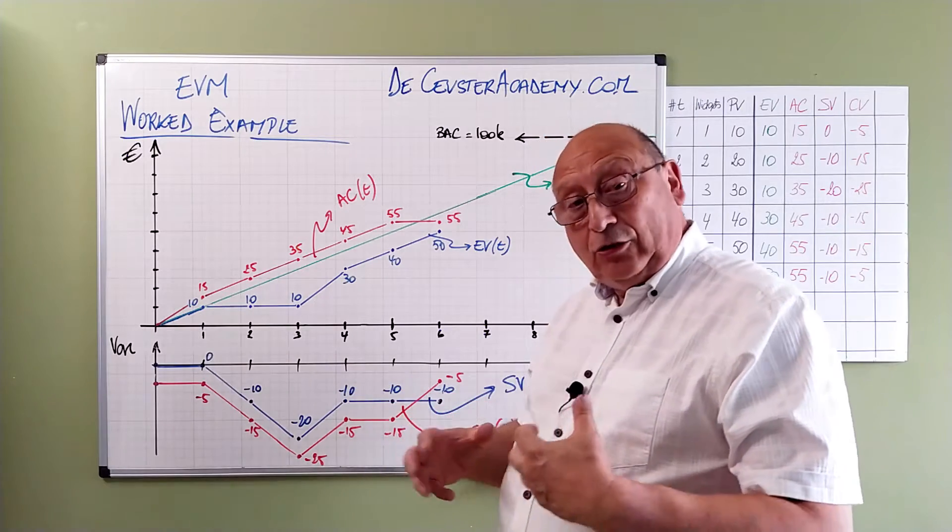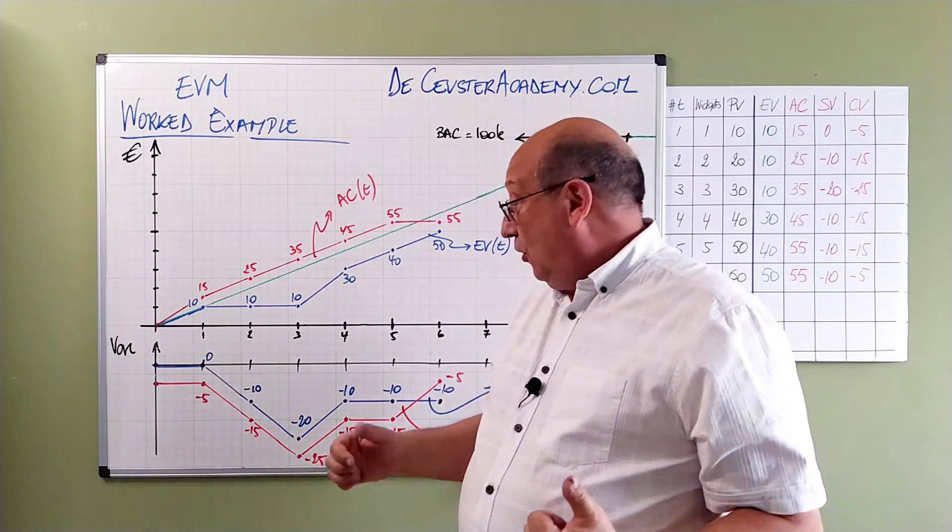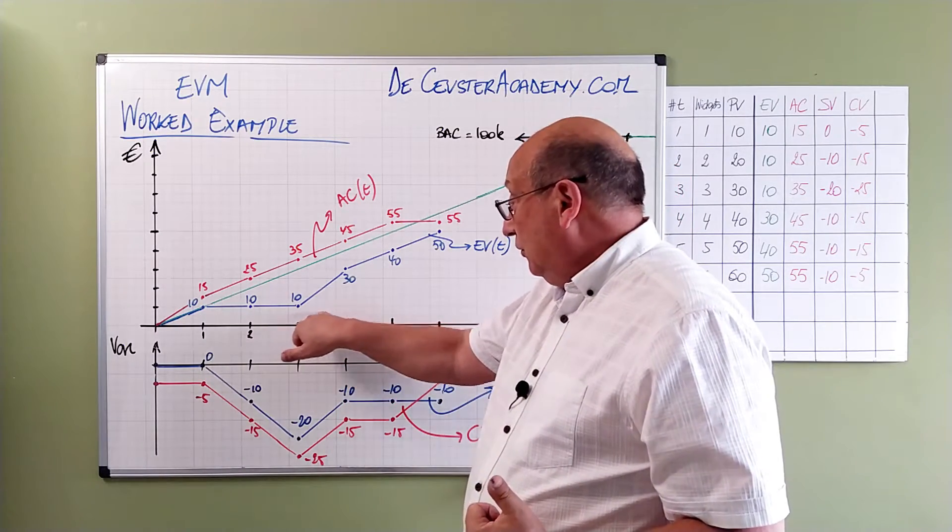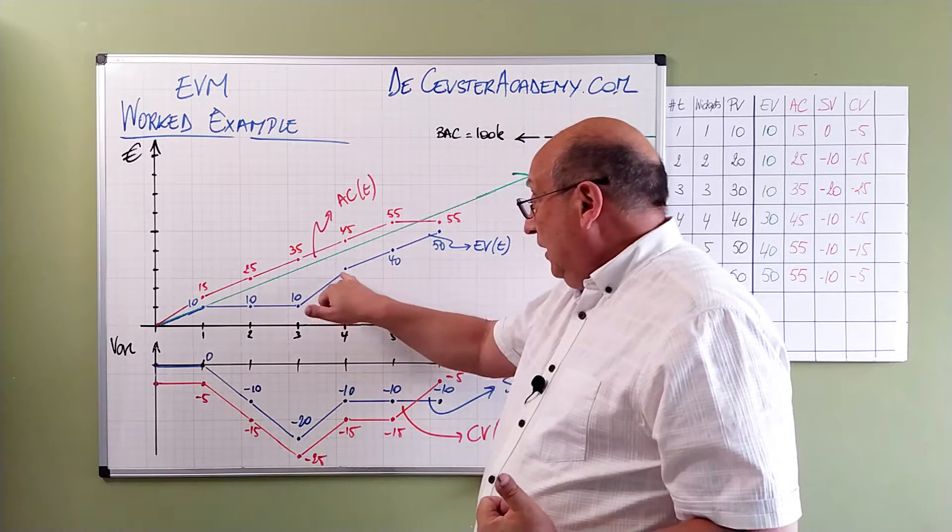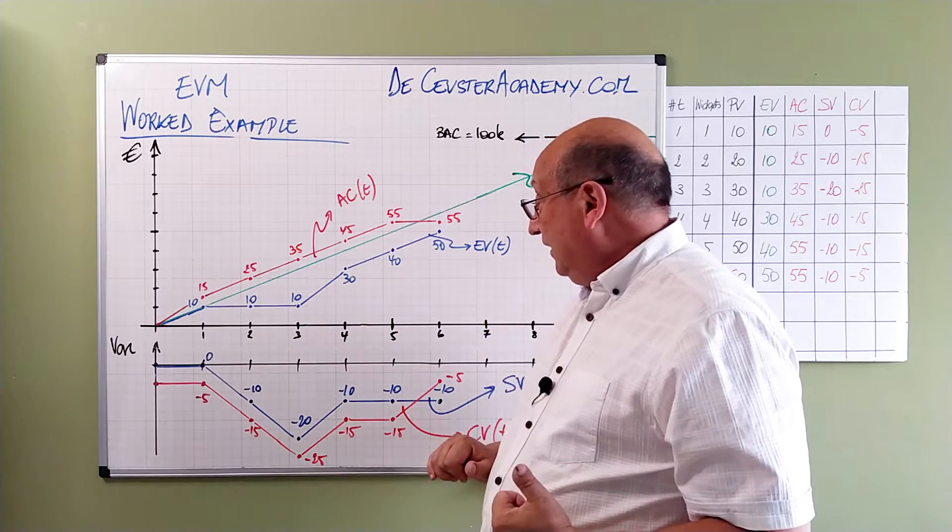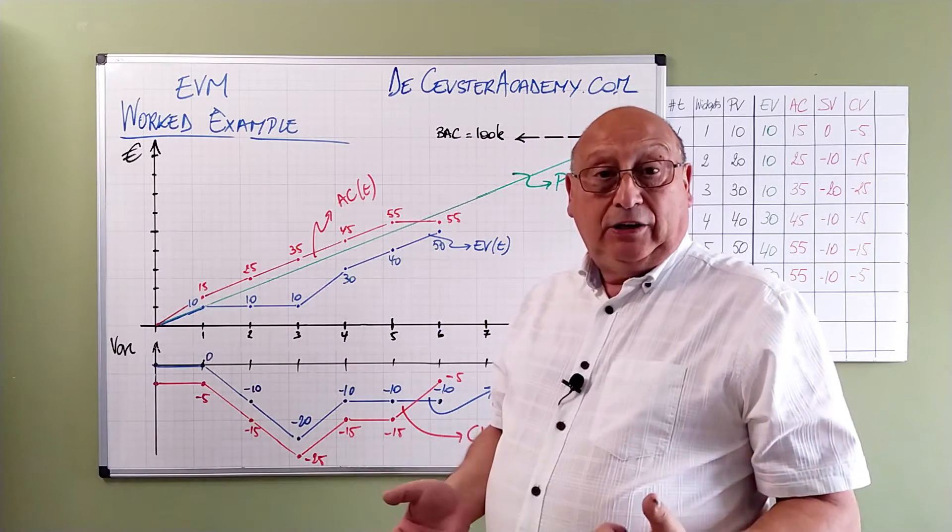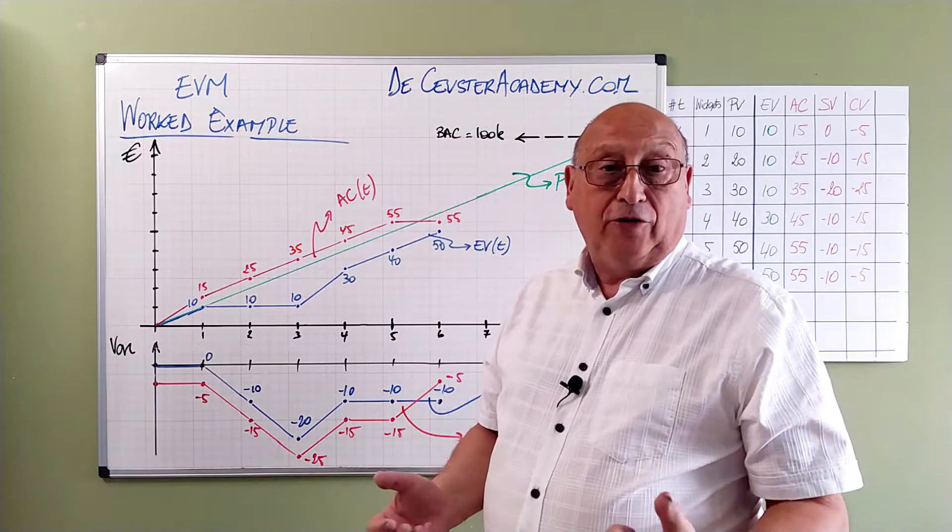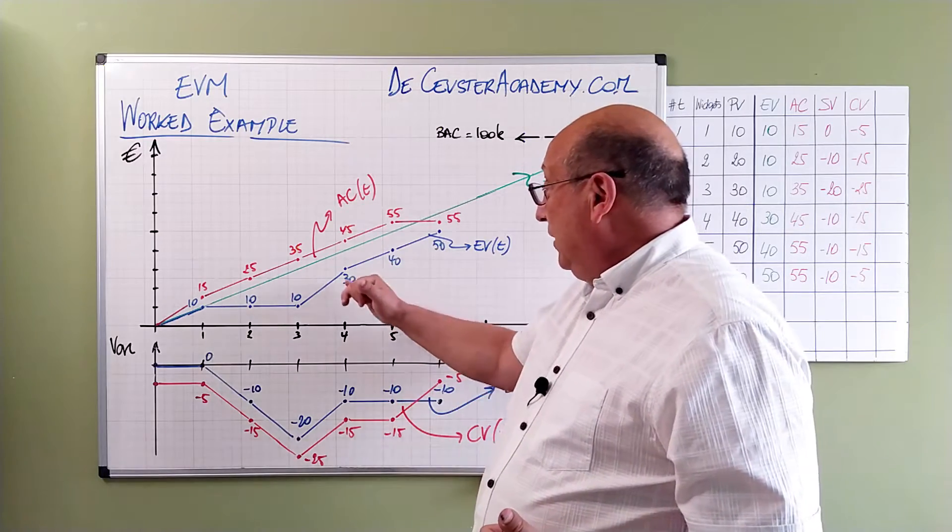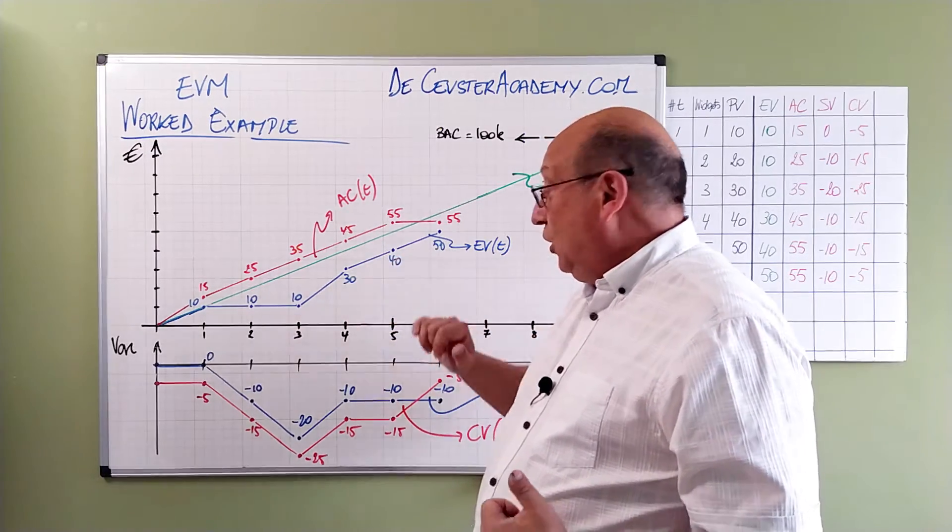But from here we see that we are getting better. Over the period from three till four, at the end of the fourth period I created three widgets, which gives me an earned value of 30 and we are coming closer.